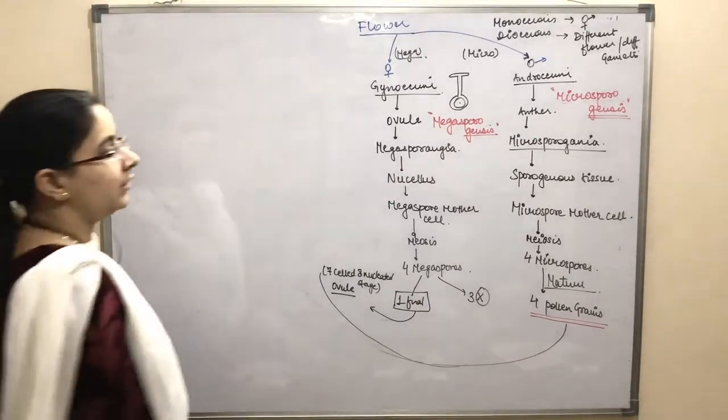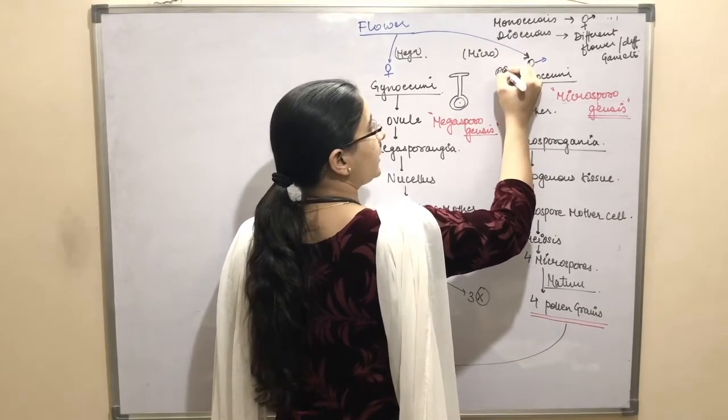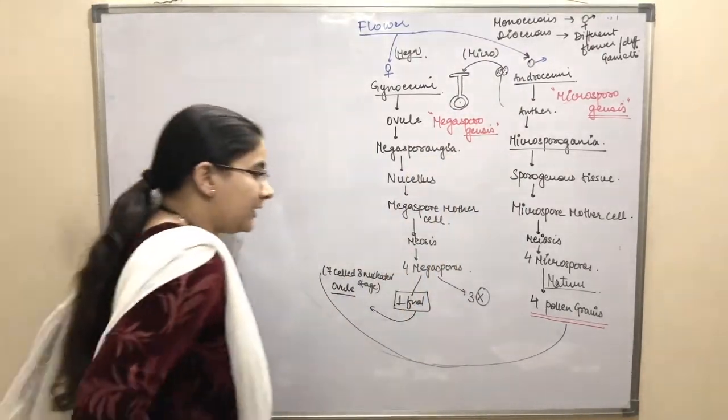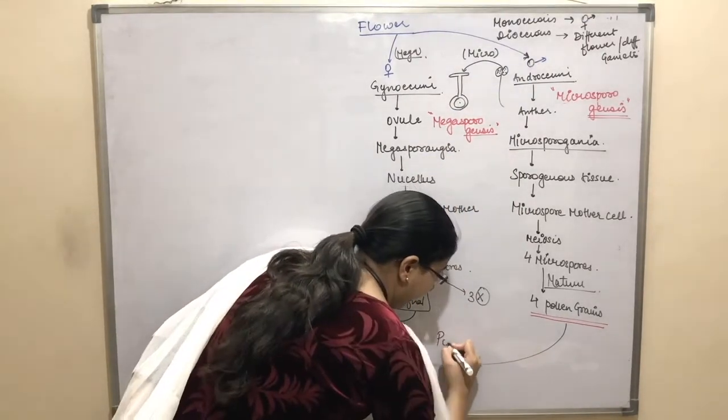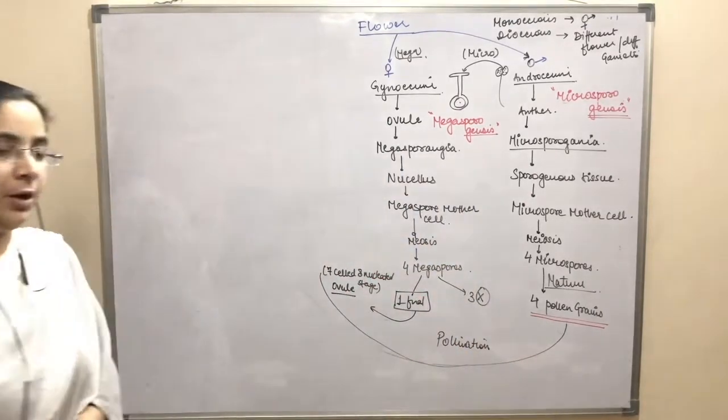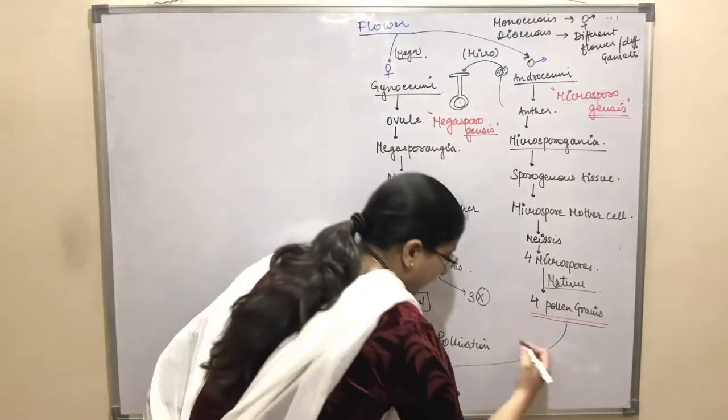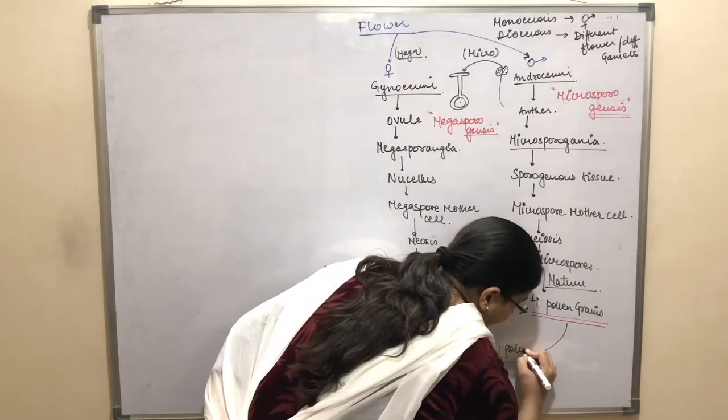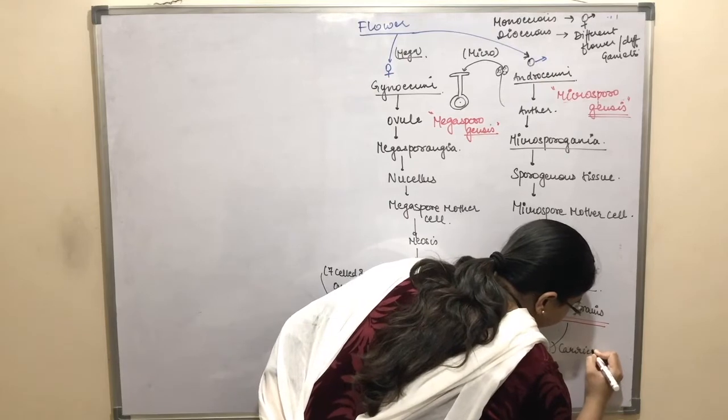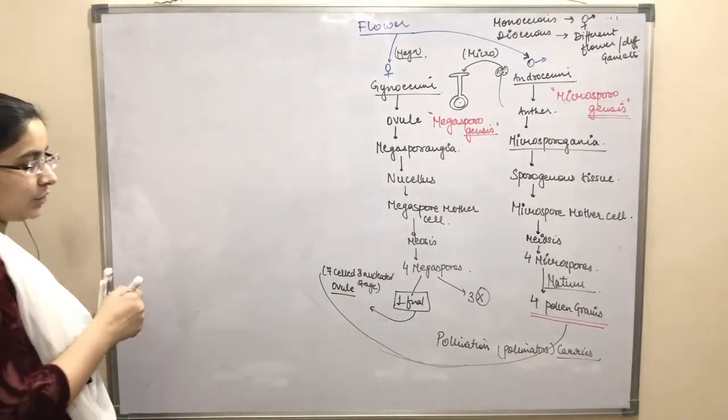The method by which the pollen grains are transferred from anther to stigma is called as pollination, and pollination is done by specific carriers called as pollinators.